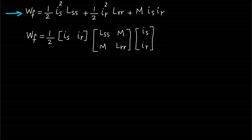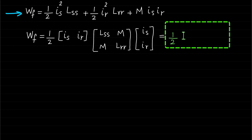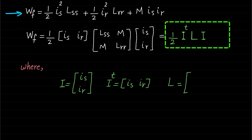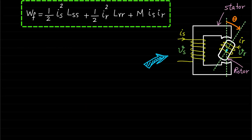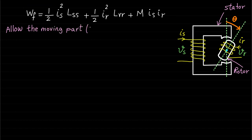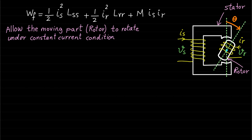The field energy WF can be represented in matrix form. The short form of this equation is WF = ½·I_transpose·L·I. At this point, the field energy expression WF of this system is achieved. Now, if we allow the moving part to rotate under constant current condition, the torque can be developed for the double excited system by using either of these two expressions.